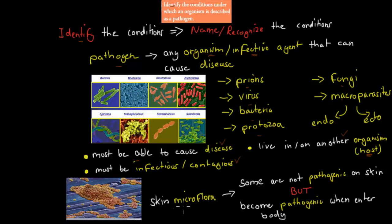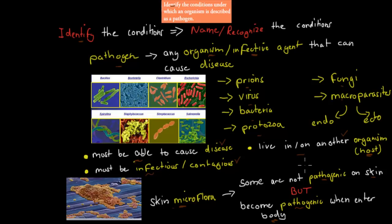One example I want to give is skin microflora — all the bacteria or different microbes living on our skin. Skin microflora are not pathogenic when they're on our skin; most of them don't cause disease. But when these same bacteria enter our body, they actually become pathogenic. So one organism can be non-pathogenic on our skin but become a pathogen once it enters our body. The main conditions are: must cause disease, live in or on another organism, and be infectious or contagious.